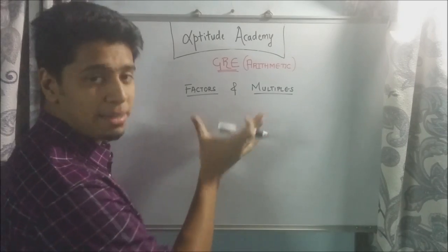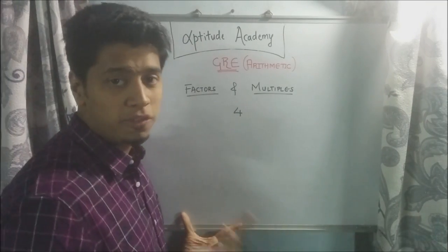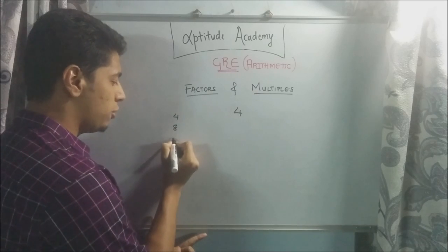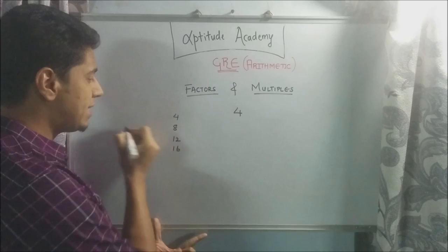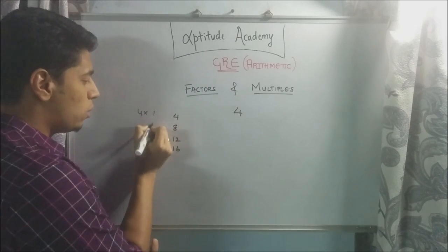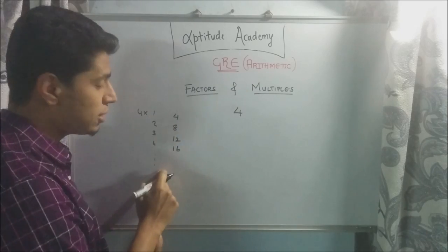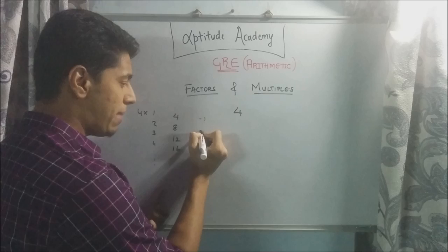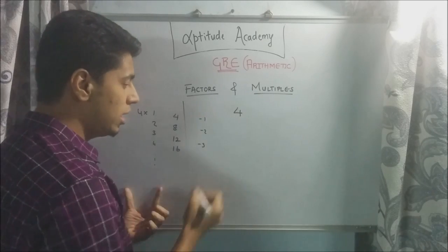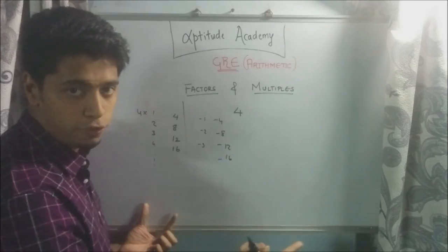Now, the best way to understand multiples is let's take an integer 4. Now, in school, you've learned your tables. 4 ones are 4, 4 twos are 8, 4 threes are 12, 4 fours are 16, and so on and so forth. What you're basically doing is you're multiplying 4 into 1, 2, 3, 4, and so on. These are the list of positive integers. Now, if you multiplied 4 by negative integers like minus 1, minus 2, minus 3, and so on, you would get minus 4, minus 8, minus 12, minus 16, and so on and so forth.